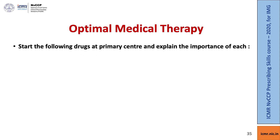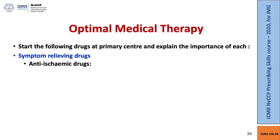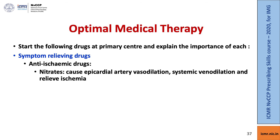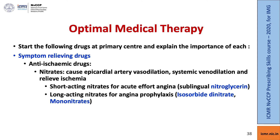What is optimal medical therapy for this patient? Start the following drugs at the primary center itself and explain the importance of each. We have symptom-relieving drugs such as anti-ischemic drugs, which are nitrates — these cause epicardial artery vasodilatation, systemic venodilatation, and relieve ischemia. Short-acting nitrates for acute effort angina, such as sublingual nitroglycerine. Long-acting nitrates for angina prophylaxis, such as isosorbide dinitrate or mononitrates.